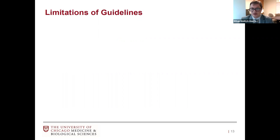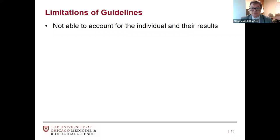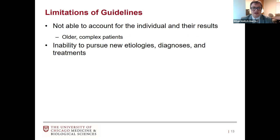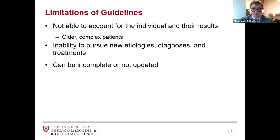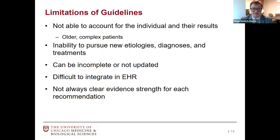Guidelines are great public health and population-based resources providing best levels of care for common clinical scenarios. But some limitations: they're not always able to account for the individual in front of me, as the population-level data often doesn't include older and more complex patients. When following a guideline directly, we're not always able to pursue new etiologies, diagnoses, and treatments. Guidelines can be incomplete, not frequently updated, and difficult to integrate into the electronic health record.